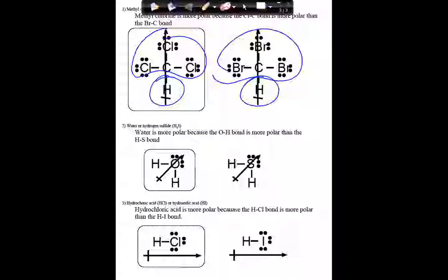We subtracted. You look up the electronegativities of these elements, subtract, and the molecule that has the biggest difference in electronegativity will be the most lopsided and therefore the most polar. Here we've got carbons in the middle, but chlorine is more electronegative than bromine, so those differences would be bigger, making that more polar. Here we've got hydrogens in both molecules, but oxygen is more electronegative than sulfur, so that's more polar.